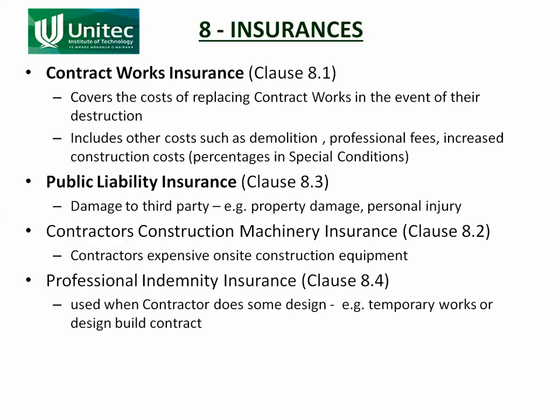Another type of insurance is covered in Clause 8.3: public liability insurance. This is damage to a third party — someone not involved in the contract, such as a neighbour. A situation I've seen was when they were excavating a basement for a hotel right up to the boundary line, and the house next door started to slump and was damaged because the excavation wasn't supported properly. The cost of that damage would have been covered by public liability insurance, which would cover rebuilding that person's house.